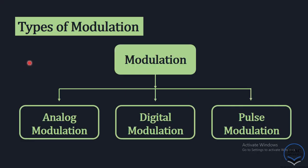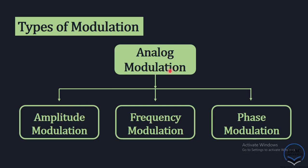We are now in the last part of this lecture. We will conclude with the classification of modulation. Basically, we have three types: analog modulation, digital modulation, and pulse modulation. Analog modulation can be further divided into amplitude modulation, frequency modulation, and phase modulation. Frequency modulation and phase modulation are collectively called angle modulation. So we have two types of analog modulation: amplitude modulation and angle modulation.